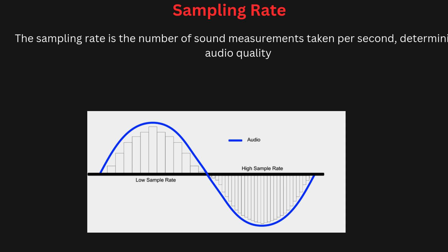The sampling rate refers to how many times per second a sound wave is measured or sampled, and it is measured in Hertz. Common sampling rates include 44.1 kHz for CDs and 48 kHz for DVDs. A higher sampling rate captures more detail of the original sound, resulting in better quality; however, higher rates also mean larger file sizes. The sampling rate is a critical factor in determining the overall quality of digital audio in multimedia applications.